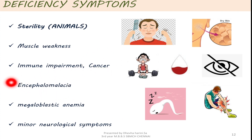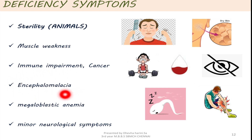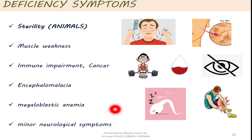A condition called encephalomalacia, where there will be softening or loss of brain tissue, is also seen. Megaloblastic anemia and some minor neurological symptoms such as sensory loss, ataxia — which is the impairment in balance — and retinitis pigmentosa are also seen.